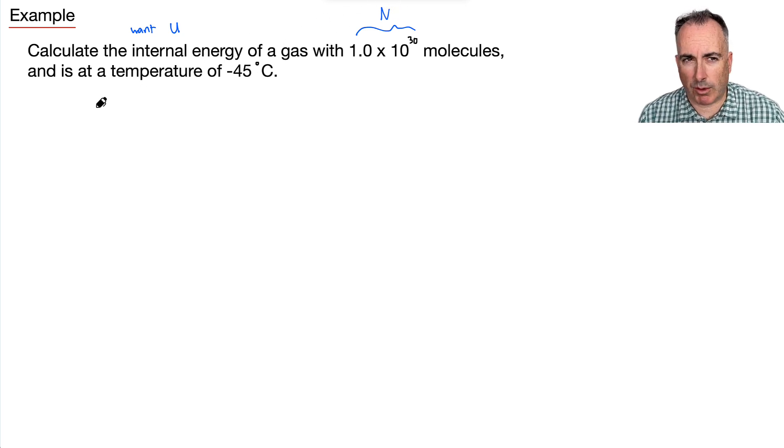Well, it helps to write down the equations then for internal energy. So we have either 3 halves nRT, or we have U equals 3 halves capital N times KB times T. Which one is easiest to use? Well, we don't know the number of moles, but we do know the number of molecules, so I think it's probably easiest to use this one. So I'll say that's maybe a good choice.